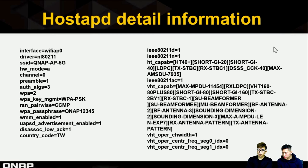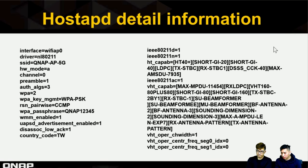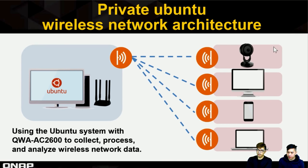Beyond the essential commands shown in blue, additional reference commands are listed for other Ubuntu wireless AP configuration options, including viewing hostapd detail information. After completing all settings, this creates the architecture of a private wireless network environment on your Ubuntu PC.